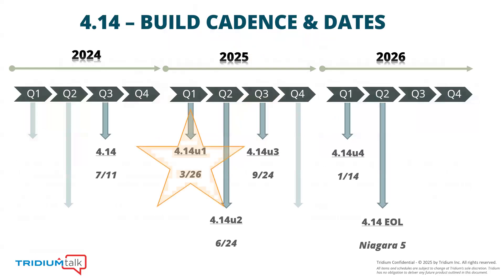Looking into the future with 4.14, we've got 4.14 U1 staged to come out at the end of next month, and it will continue until Niagara 5 is released, targeting 2026. One thing to call out about Niagara 4.14 is that this is the last version that will support Wi-Fi on the JACE 8000. Coming with 4.15, the 9000 — which is more powerful and Niagara 5 ready — is getting Wi-Fi support. So start thinking about that upgrade and working with your customers to move if Wi-Fi is critical on the 8000.